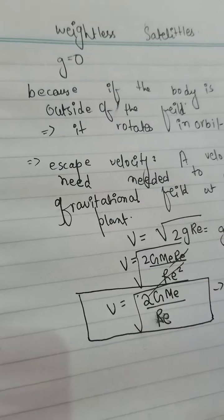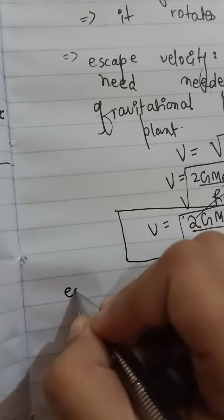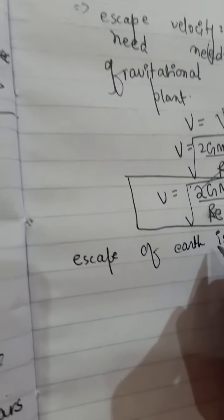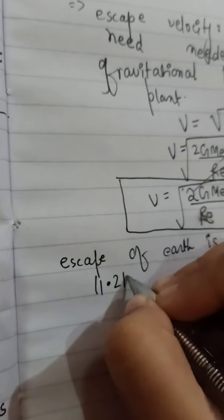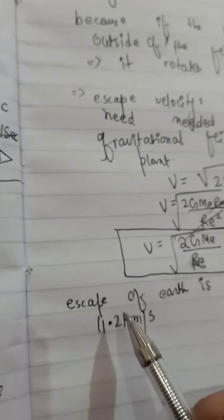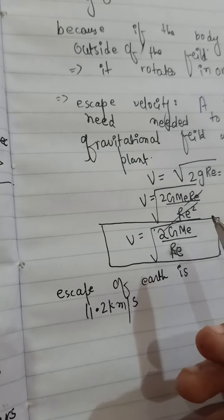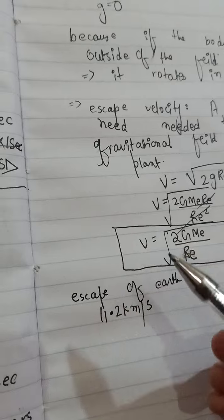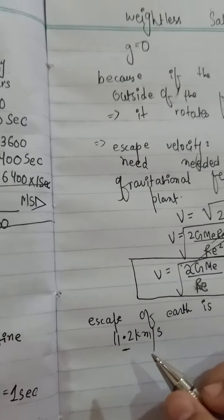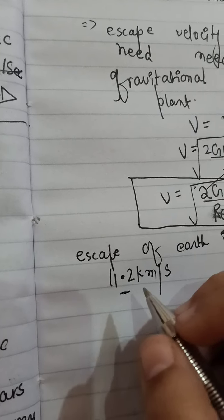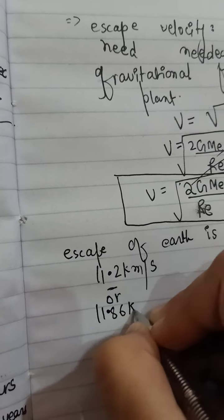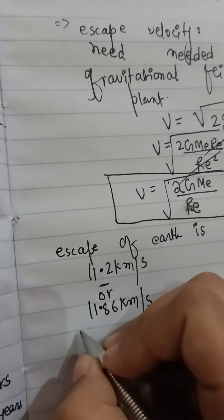I told you I would tell you the escape velocity of Earth. The escape velocity of Earth is 11.2 kilometers per second. This is the actual speed at which a satellite or anything going outside of the Earth becomes weightless. There is also a value of 11.86 kilometers per second used in some exceptional cases, but the most accurate is 11.2 km/s.